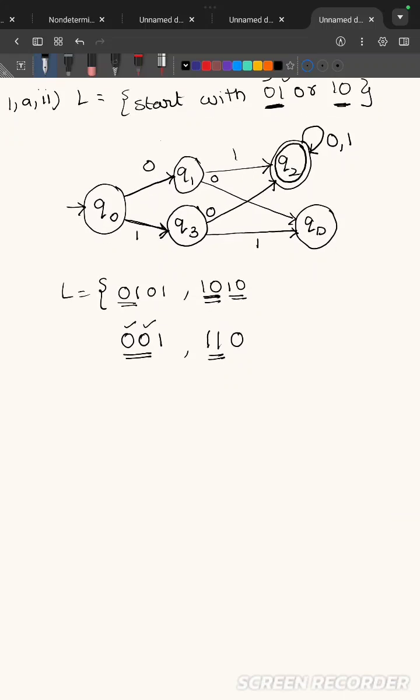Now we will draw the transition table for that. Diagram is done, we will draw the transition table. So we are having q0, q1, q2, q3, and one dead state. This is my initial state, q2 is my final state. q0 on 0 goes to q1, q0 on 1 goes to q3.